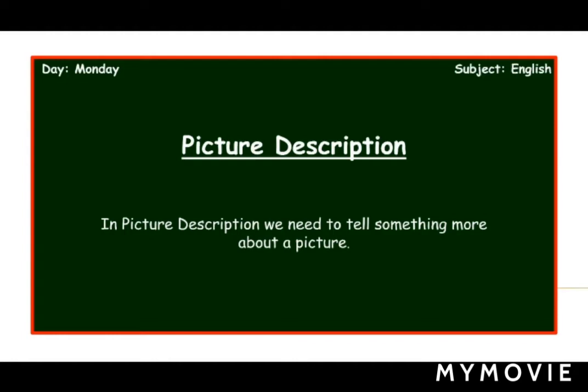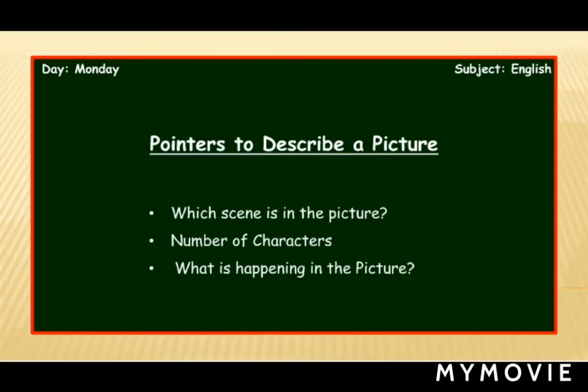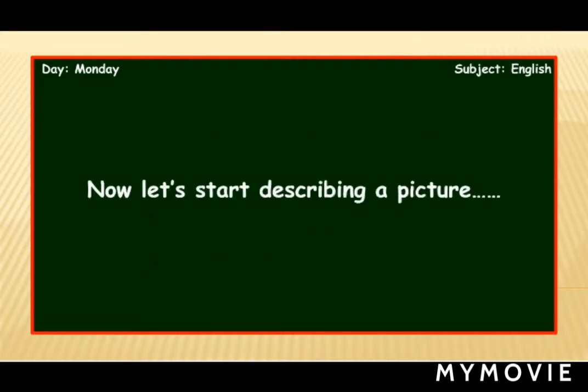Today we will learn how to tell something more about a picture — what is there in the picture and what it is all about. There are some pointers to describe a picture: number one, which scene is there in the picture; number two, the number of characters in the picture; number three, what is happening in the picture.